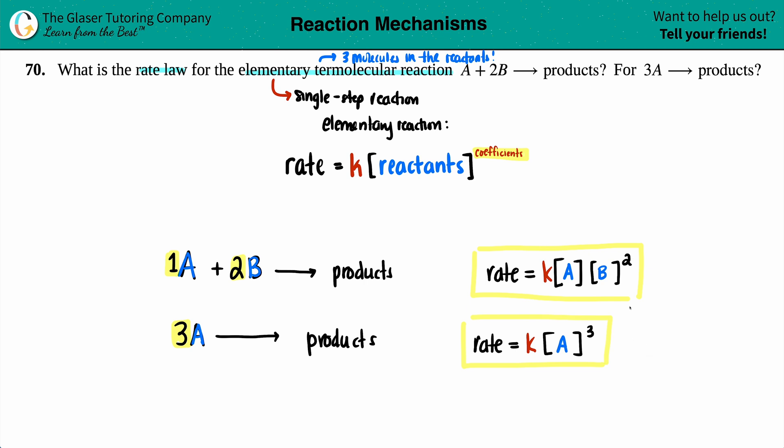Just note that for all rate laws, it doesn't matter if it's elementary or an overall reaction, nobody cares about the products. That's why they just said products. When you're writing a rate law, it's only about the reactants. And then the only difference is that if they said that it's elementary, you can just raise it to the coefficients because the rate law will always abide by an elementary step. And that is it.